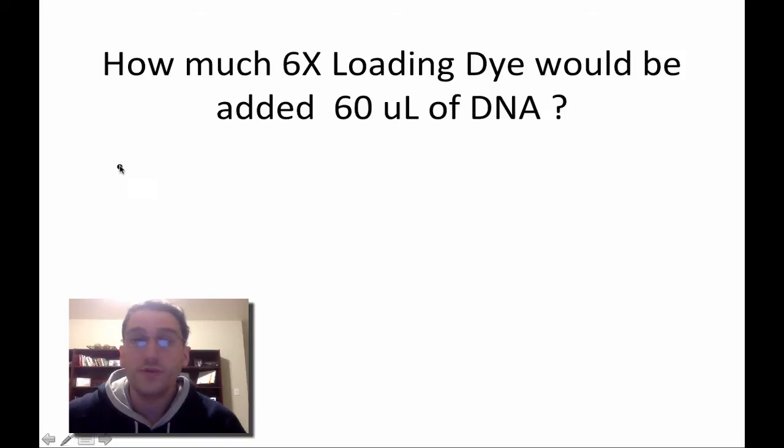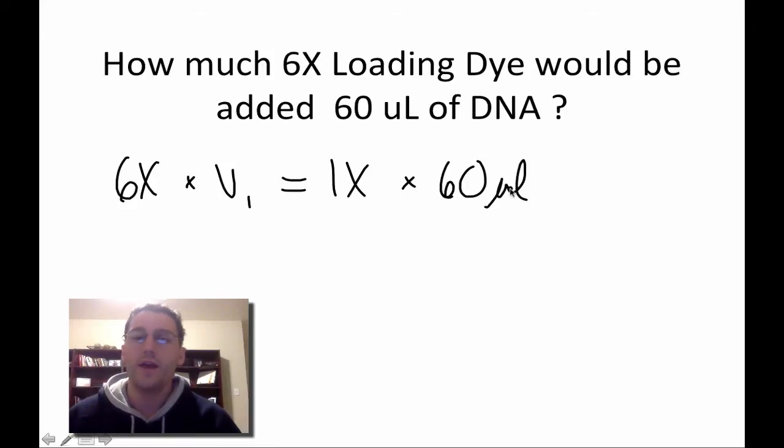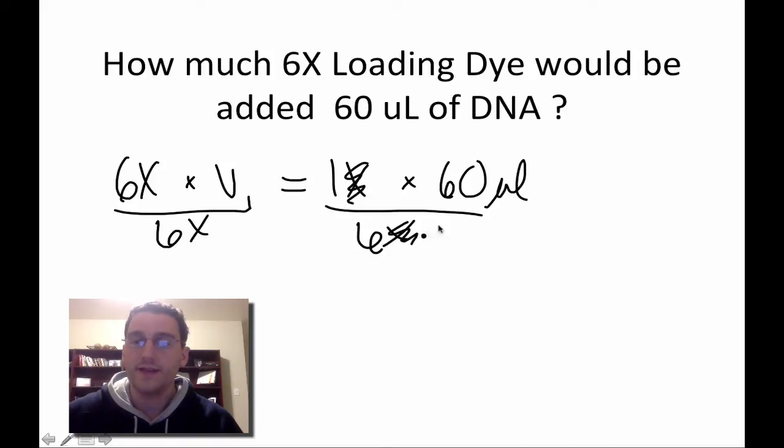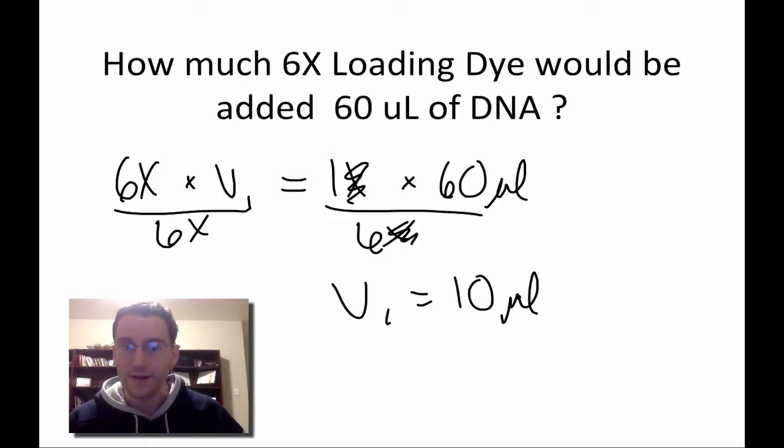So normally what we would do is we would use the dilution equation, which is 6X times V1 is equal to 1X times 60 microliters, right? And then we would divide both sides by 6X. X is only going to cancel out, and 60 divided by 6 means that the V1 is equal to 10 microliters. And that's perfect in a normal dilution where you would add the 10 microliters, and you'd bring the volume to 60 microliters.